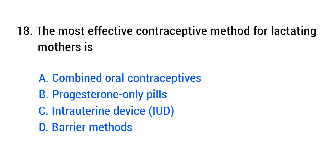Question number 18. The most effective contraceptive method for lactating mothers is? The right answer is option B, progesterone only pills.